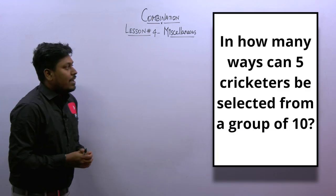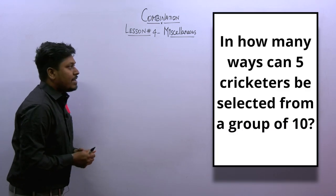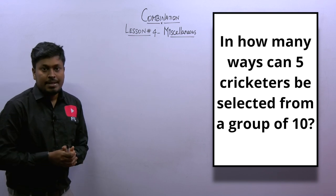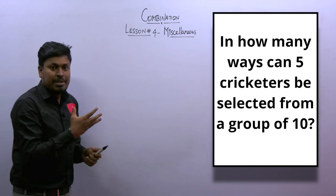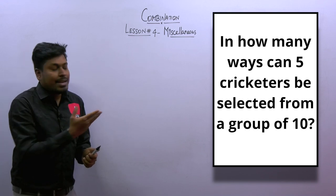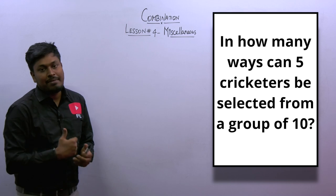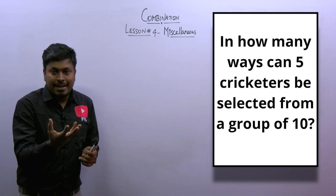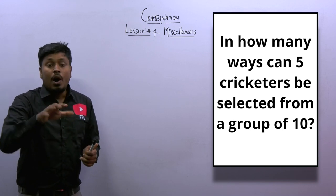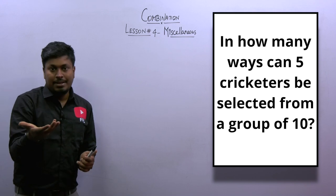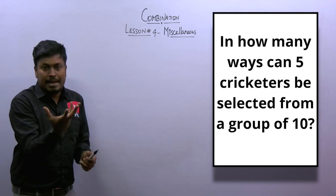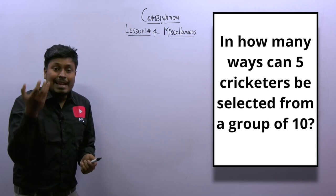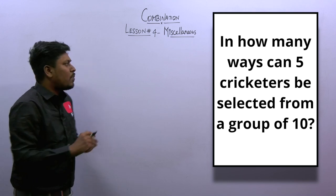Question number 1: In how many ways can 5 caricatures be selected from a group of 10? This is a very simple question — it was a memory-based question from the railway exam. Our target is to select 5 caricatures out of a group of 10, so total number of people is 10.